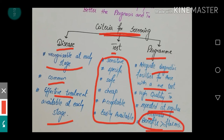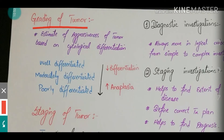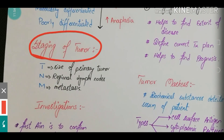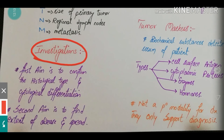Grading of a tumor is defined as an estimate of aggressiveness based on cytological differentiation. There are three types: well differentiated, moderately differentiated, and poorly differentiated. As we go down the lane, differentiation decreases and anaplasia increases. The most commonly used staging system for tumors is TNM staging: T is for the size of the primary tumor, N is for the regional lymph nodes, and M is for metastasis.